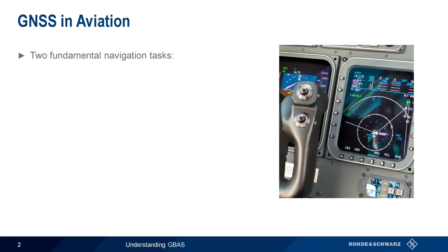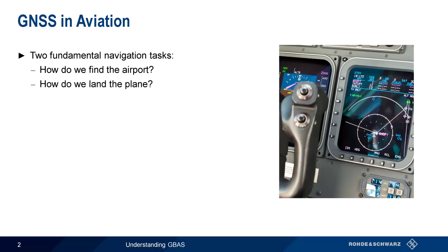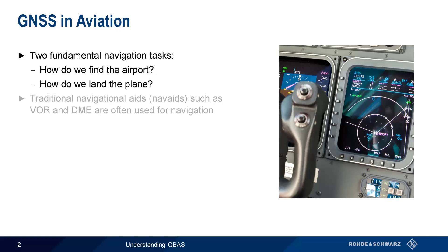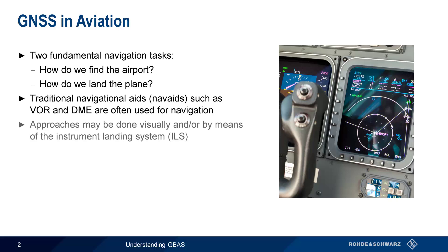There are two fundamental tasks in aeronautical navigation: how do we find the airport and how do we land the plane? Traditional radiofrequency navigational aids, or NAVAIDs, include VOR and DME, which provide azimuth and range information. Approach and landing may be done visually, and or with the help of ILS, the Instrument Landing System.